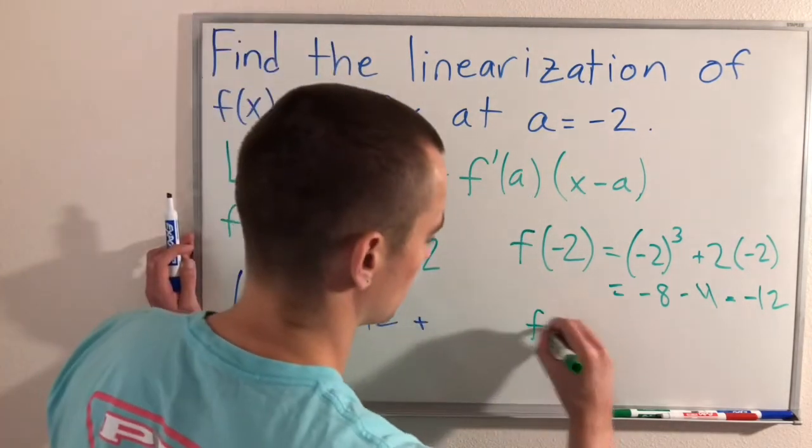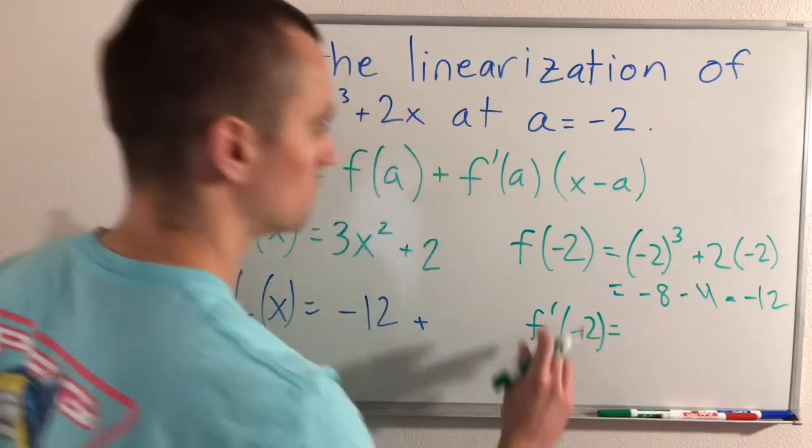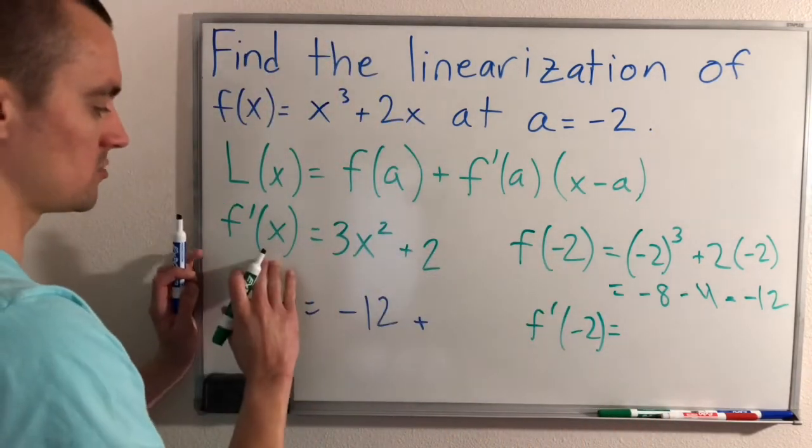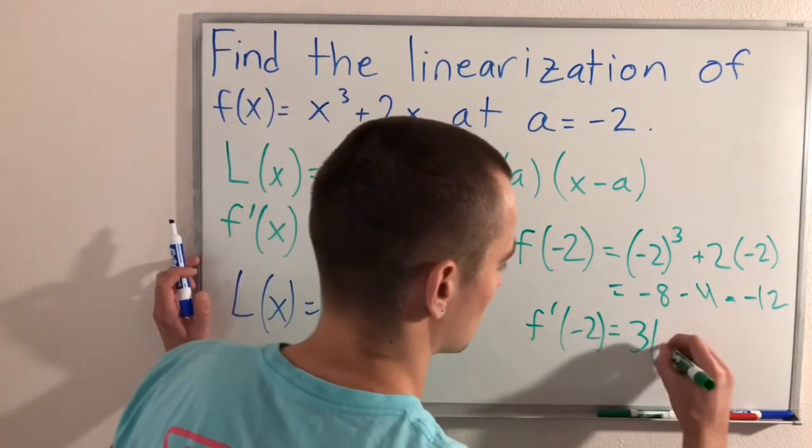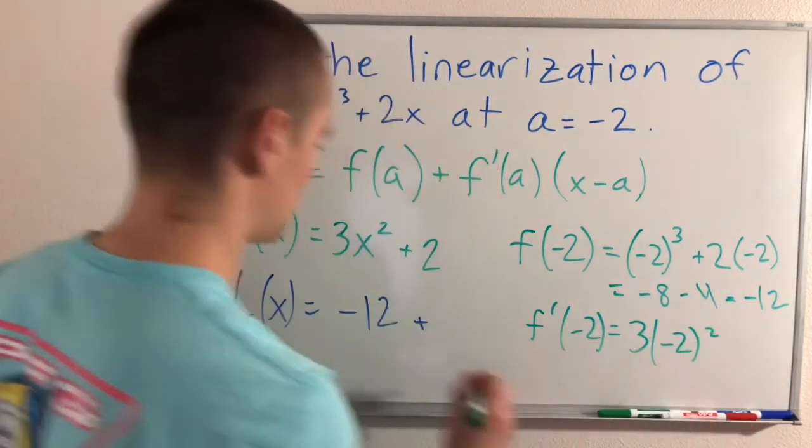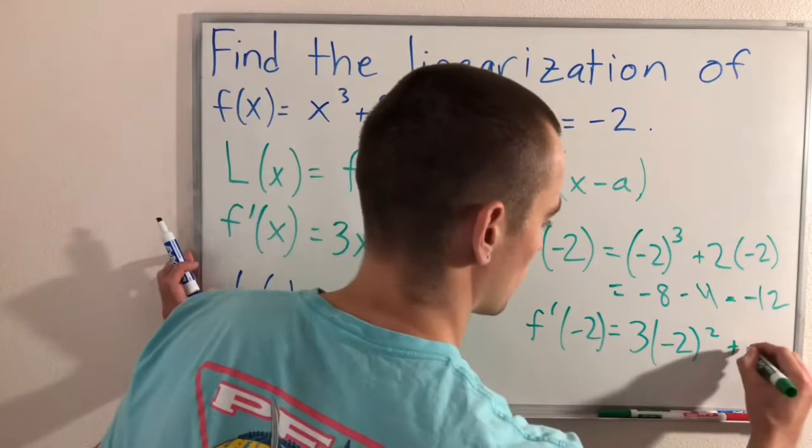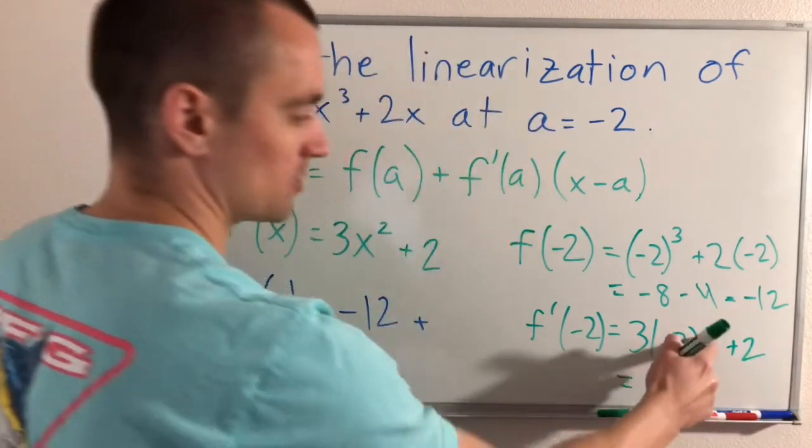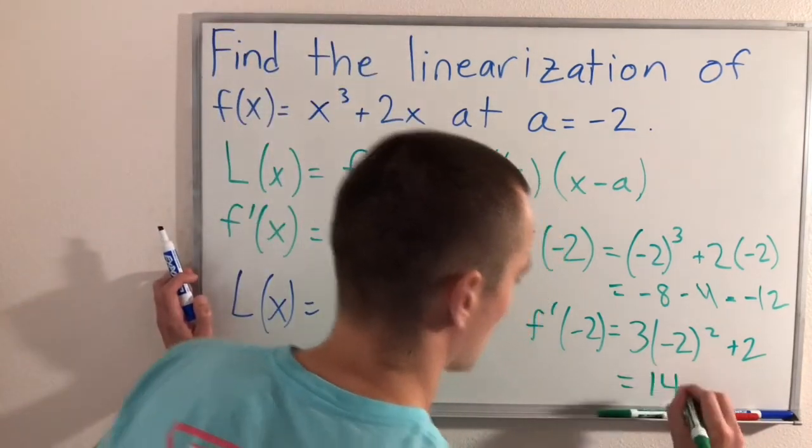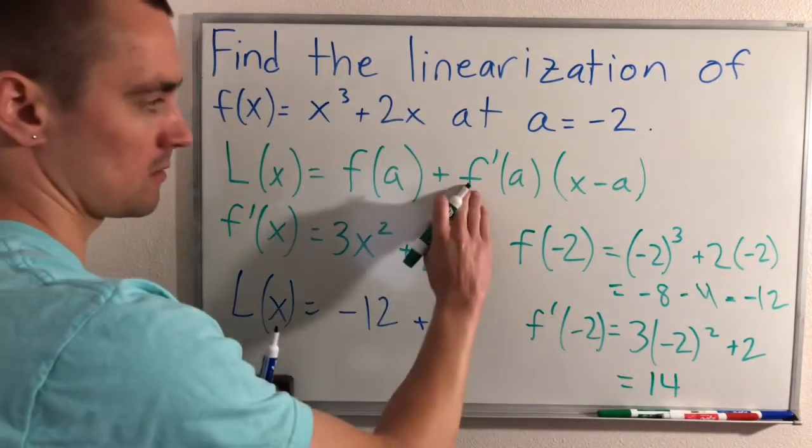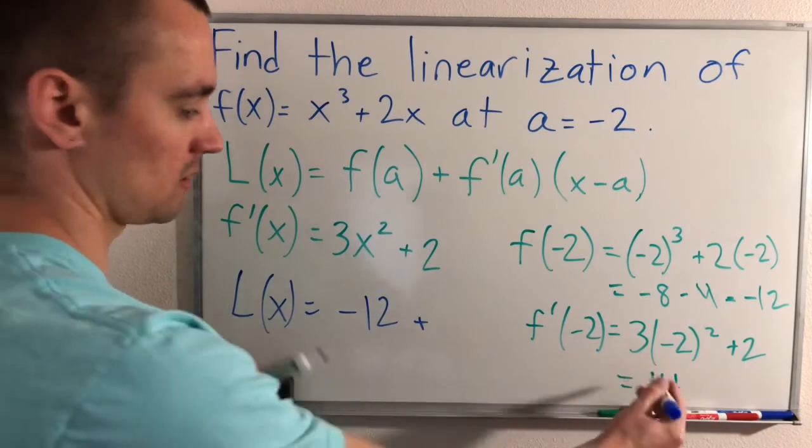So now we also need to plug in f'(-2), which is just plugging in negative 2 into f'(x). So that'll give us 3 times (-2) squared plus 2. Negative 2 squared is positive 4, times 3 is 12, plus 2 is 14. So f'(a) is just going to be 14.